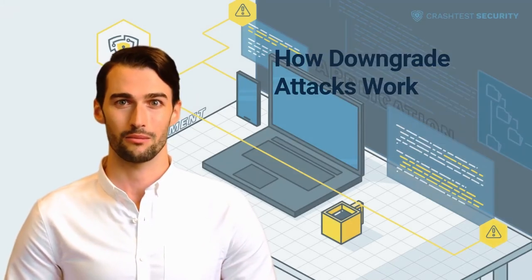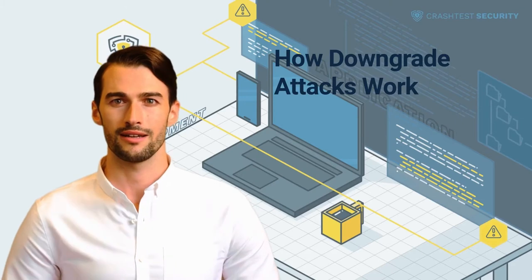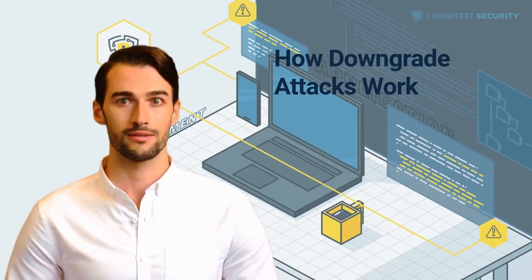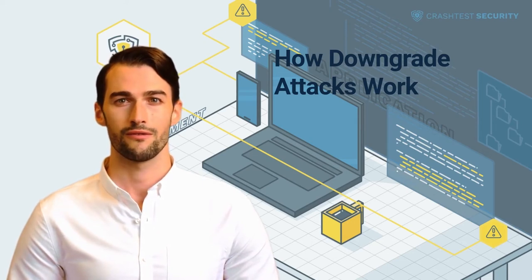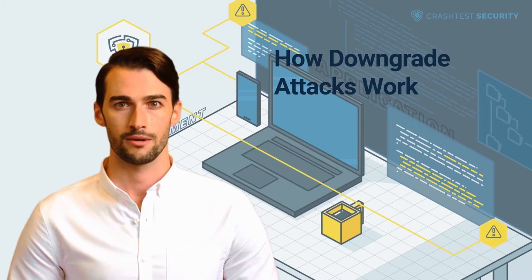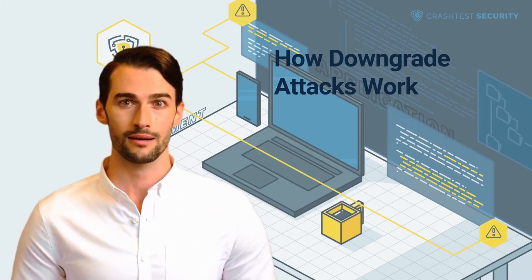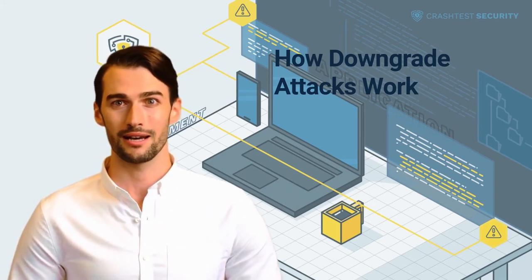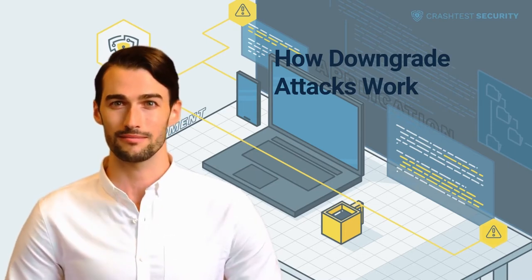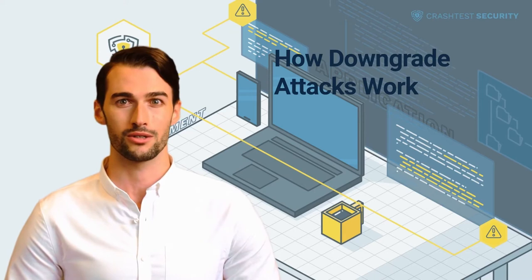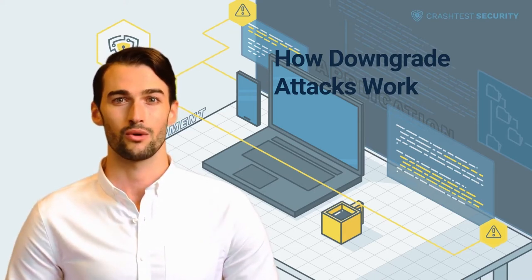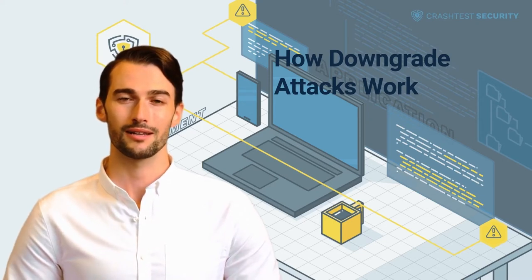Typically, a downgrade attack is part of a larger attack scenario, as the downgrade itself does not lead to a system compromise. It creates favorable conditions and vectors for further attacks, such as cryptographic attacks. A common approach is to achieve the downgrade via a man-in-the-middle (MITM) attack, enabling attackers to interfere with the user's traffic and force the server to downgrade to an older protocol TLS or SSL version — also known as a downgrade dance.